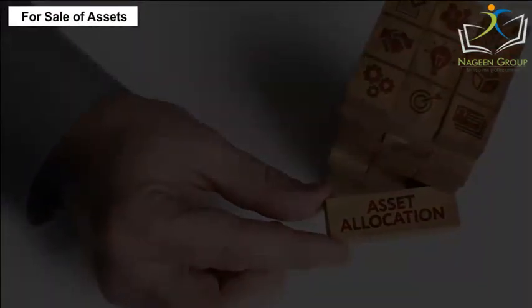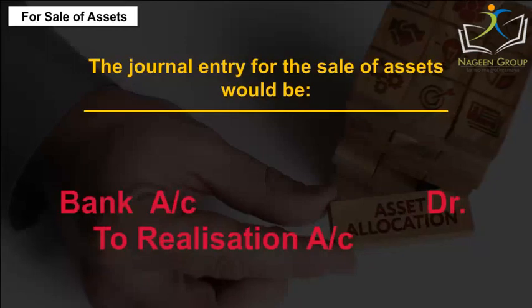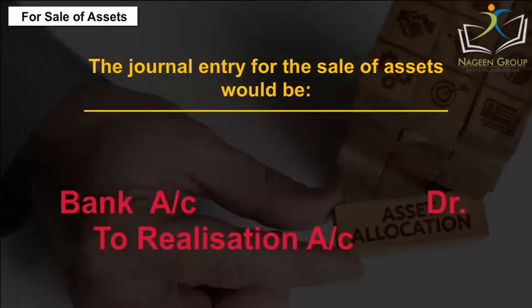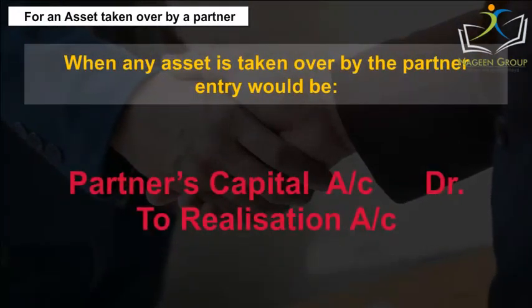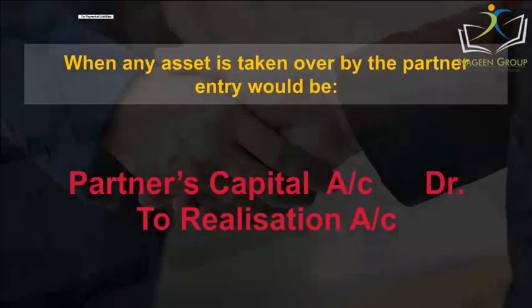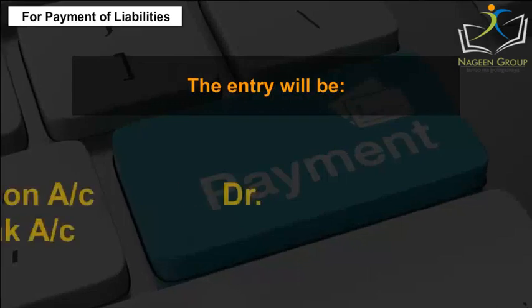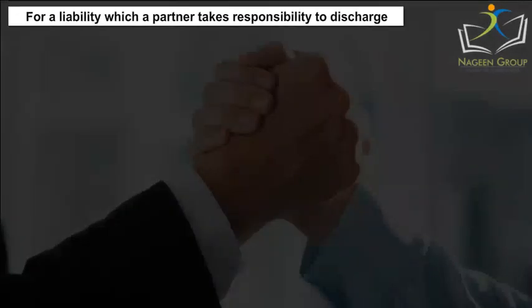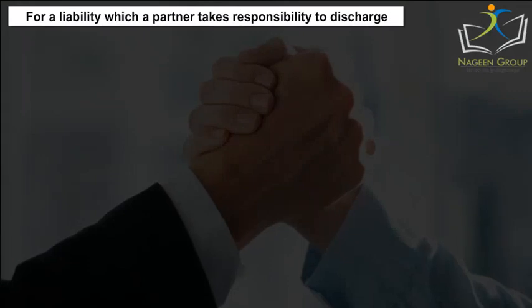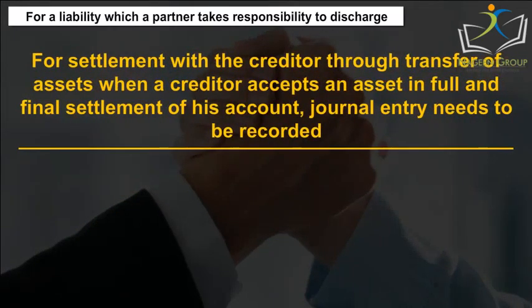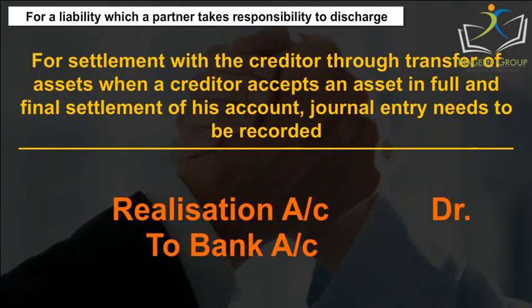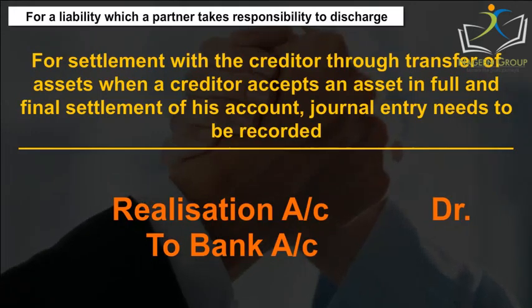For sale of assets, the journal entry for the sale of assets is recorded. When any asset is taken over by a partner, the corresponding entry is made. For payment of liabilities, the appropriate entry is passed. For a liability which a partner takes responsibility to discharge, the corresponding entry is recorded. For settlement with a creditor through transfer of assets, when a creditor accepts an asset in full and final settlement of his account, a journal entry needs to be recorded.